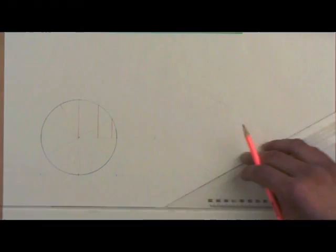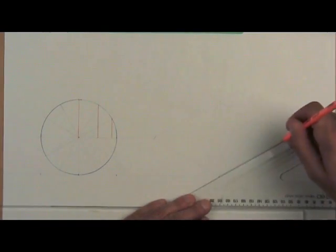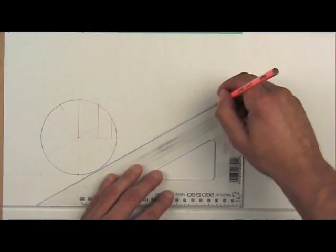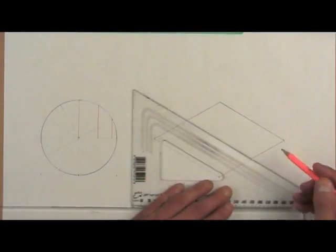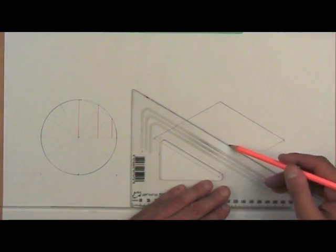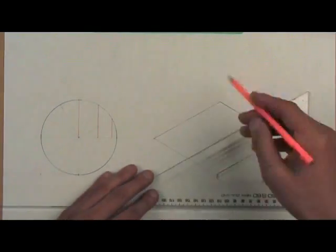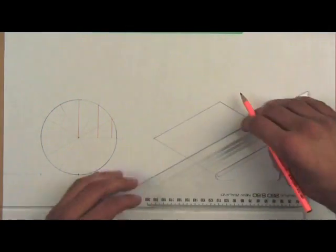Draw diagonals to establish where the center is. It's much more accurate to do it this way than measuring it. I'm just darkening in the square here so you can see what's happening more easily. Now I'm putting in center lines that will help us construct the isometric circle.